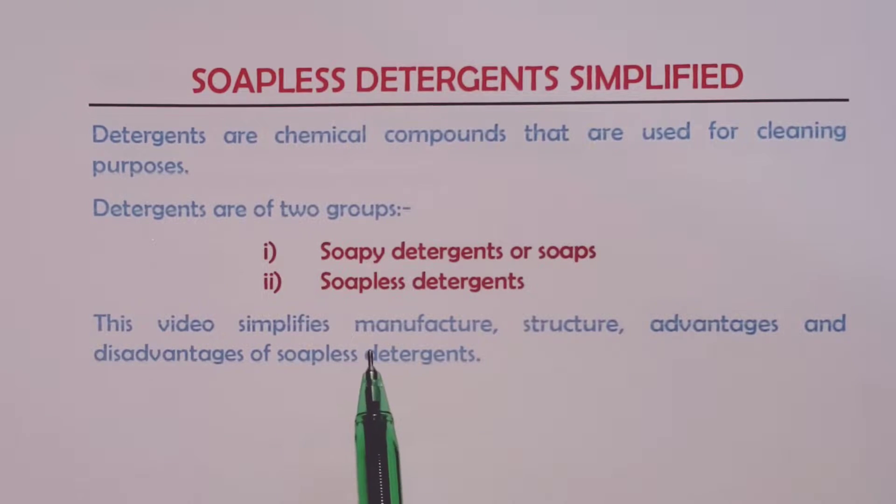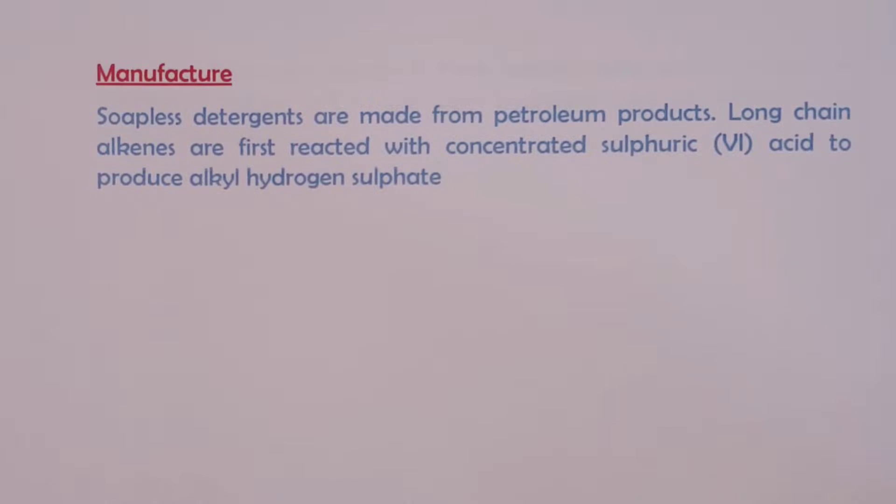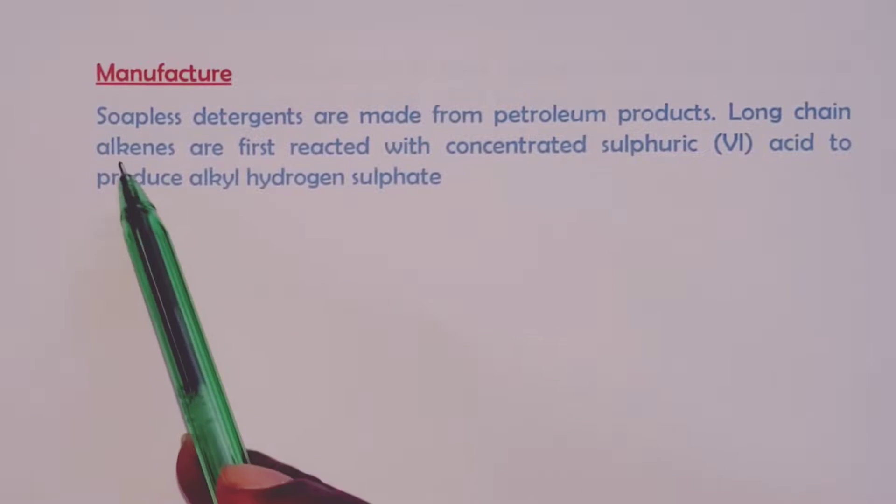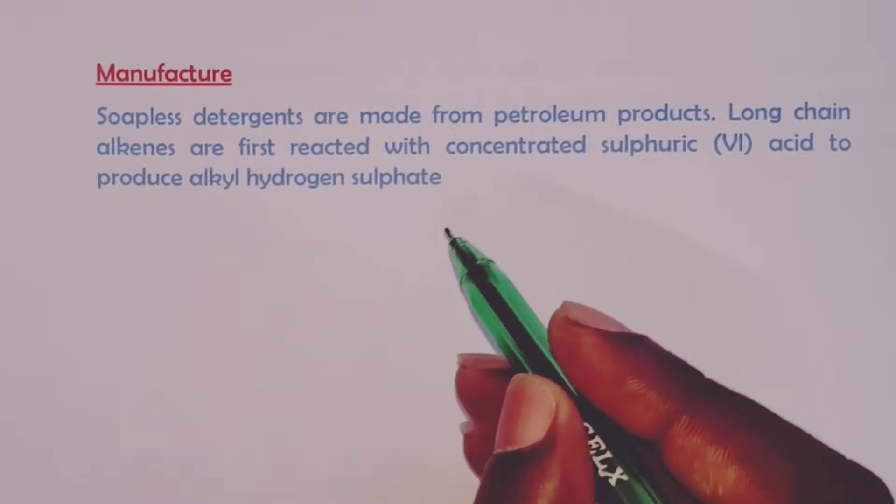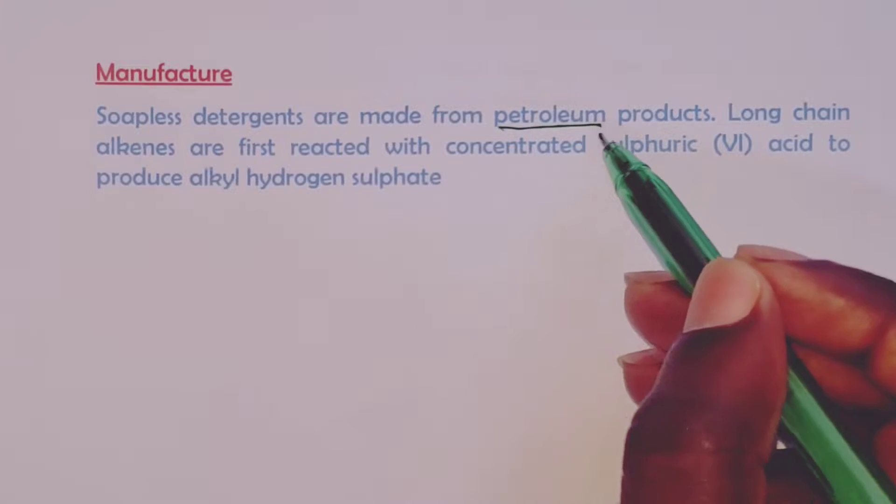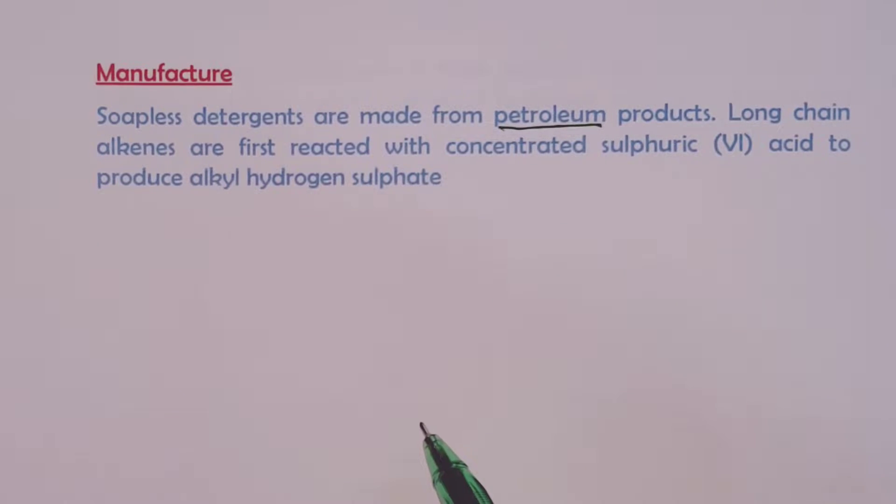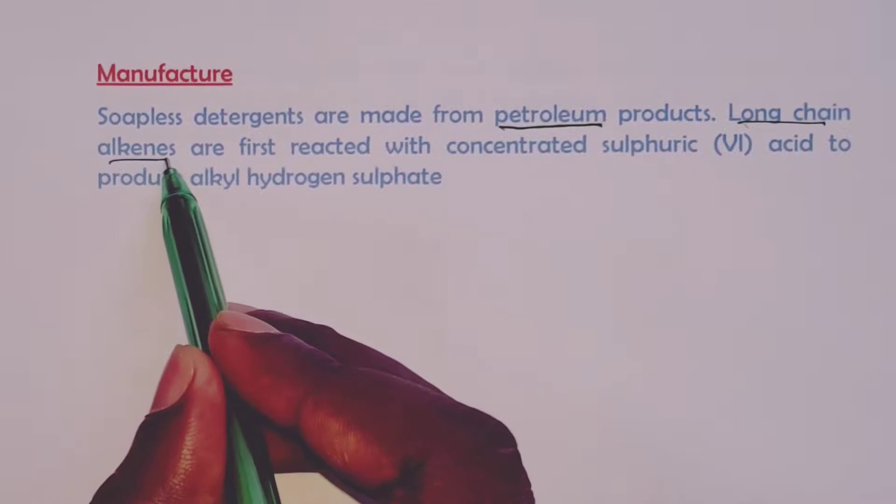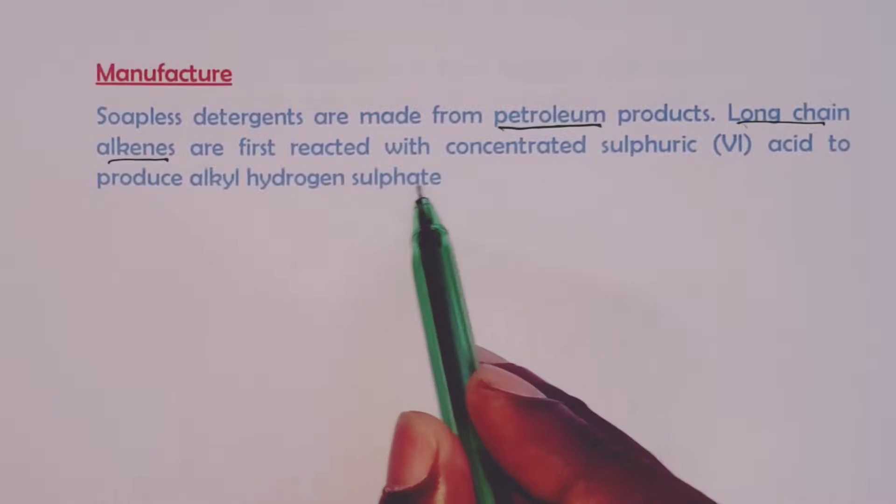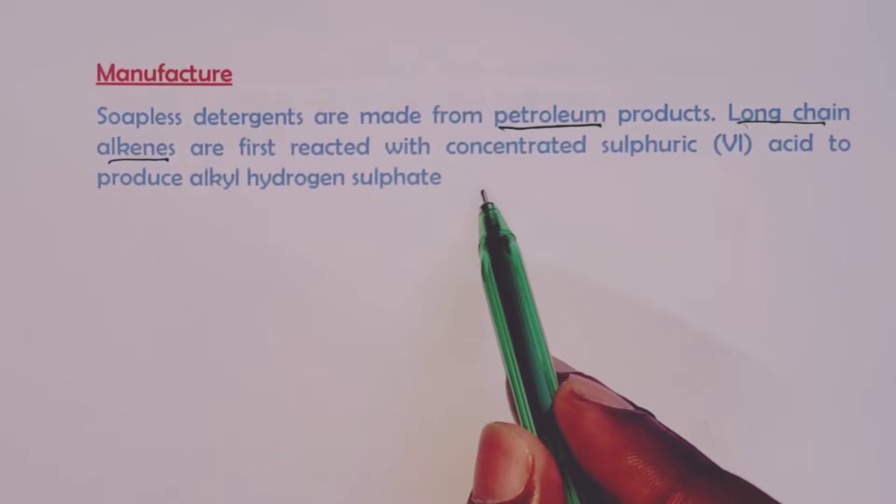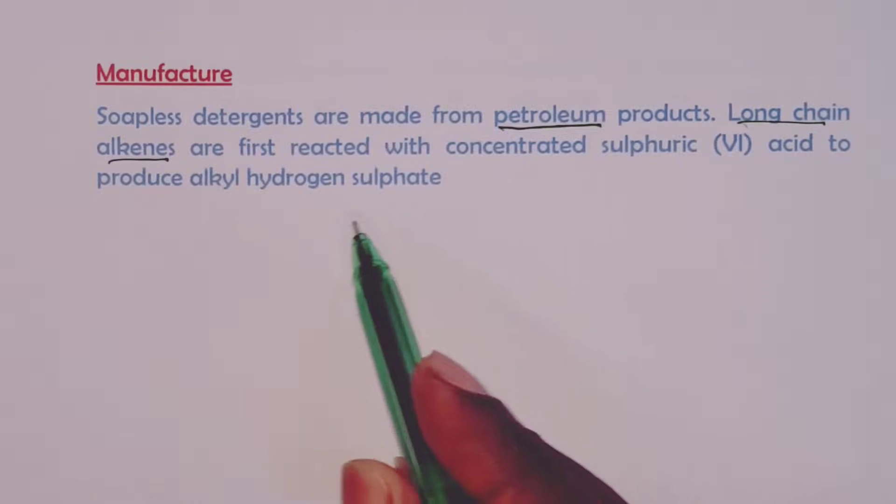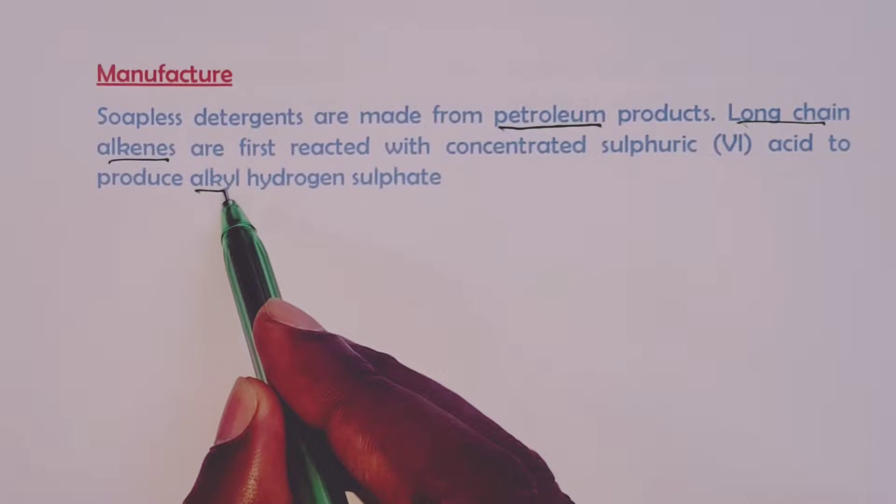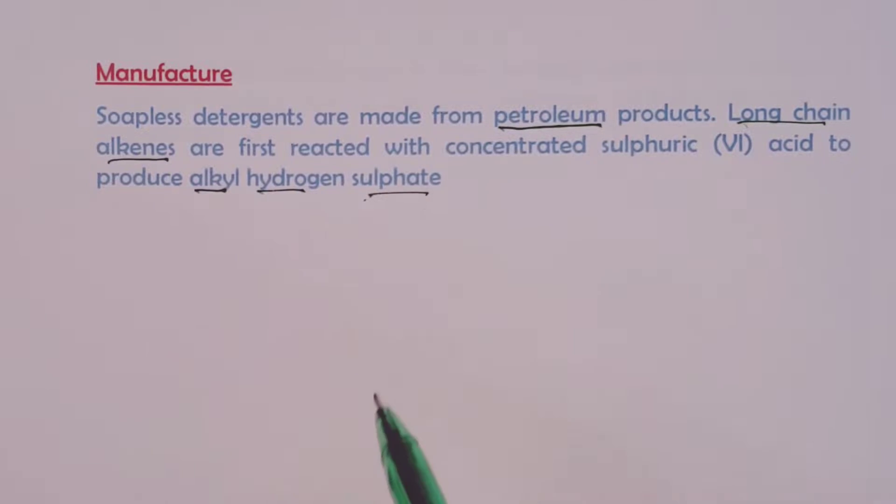We begin with the manufacturing process of soapless detergents. Soapless detergents are usually made from petroleum products where long-chain alkenes are first reacted with concentrated sulfuric acid to produce a compound called alkyl hydrogen sulfate.